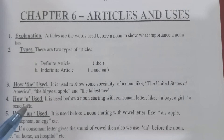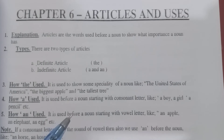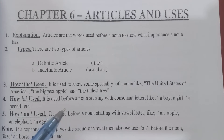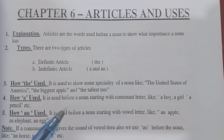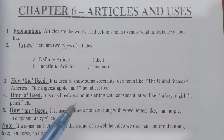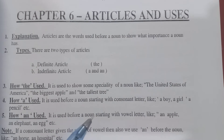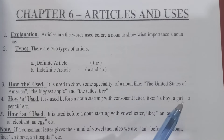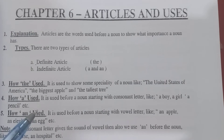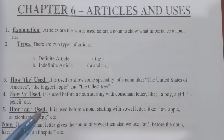Now we will look at the use of 'a.' 'A' is a consonant letter, so it is used before a noun starting with a consonant letter. 'A' means one — a simple one. 'A' is used with all consonant words, like 'a boy,' 'a girl,' 'a pencil.' It tells us about one thing.